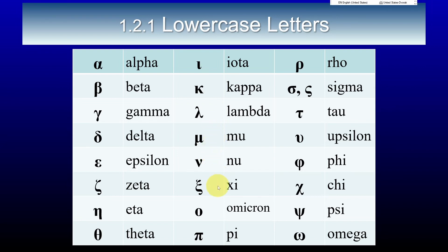Nu, xi, omicron (or omicron), pi, rho, sigma, tau, upsilon, phi, chi, psi, omega.